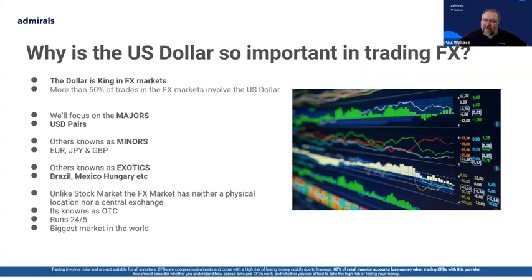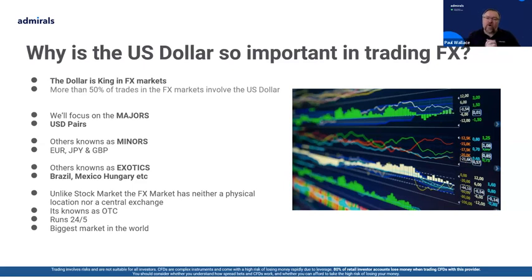The dollar is king in the FX markets — more than 50% of trades in the FX markets involve the US dollar. So as a starting trader in FX, it makes sense to focus on the majors, those US dollar pairs. Remember, an FX trade is two currencies effectively — the base currency and a quote currency — and you are basically trading the one against the other. So it makes sense to focus on the majors first, then the minors — the two to eight currencies trading amongst each other — and then the others known as the exotics: Brazilian real, Mexican peso, Hungarian forint.